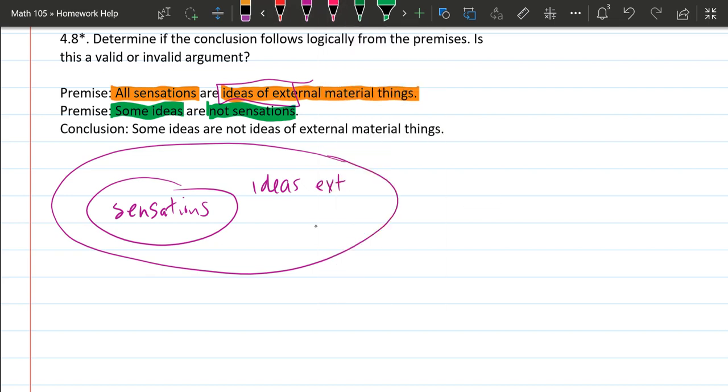So we got some ideas. Now this is a little bit tricky because the word ideas is repeated. However, they're talking about different ideas. This one's ideas of external material things and this is just regular ideas.